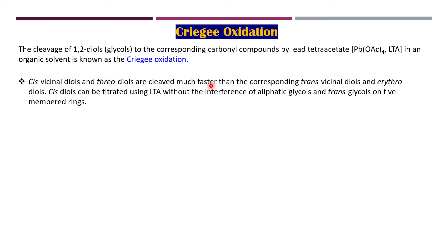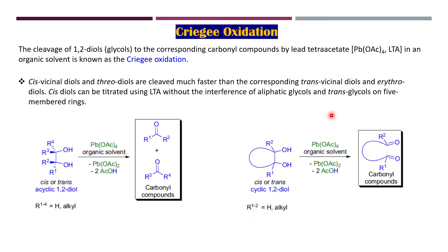A few important points: cis vicinal diols (threo diols) are cleaved much faster than trans vicinal diols (erythro diols). Cis diols can be titrated with lead tetraacetate without the interference of aliphatic glycols and trans glycols on five-membered rings. Here we consider a cis or trans alicyclic 1,2-diol.